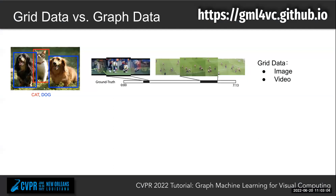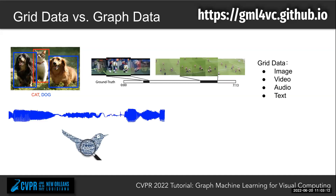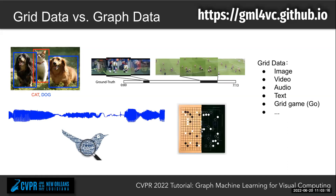We see lots of data that lie on regular grid structures, such as images, video, audio, and text, and even board games. For those regular grid structures, we can use convolutional networks or recurrent neural networks to model them easily.